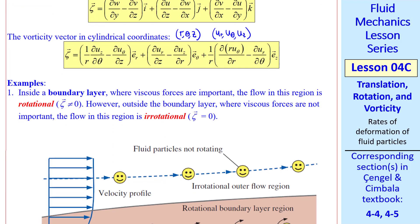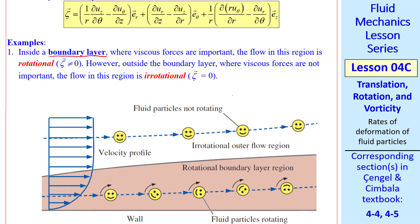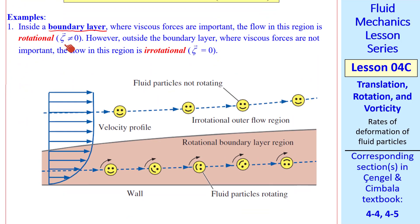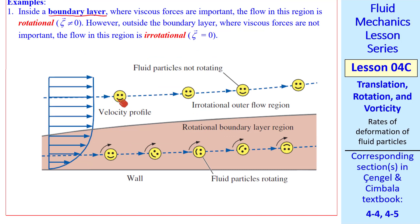Now some physical examples. In a boundary layer where viscous forces are very important, the flow is rotational. Zeta is not 0. But outside the boundary layer where viscous forces are not that important, the flow in that region is irrotational. Zeta equals 0. To illustrate, suppose the fluid element is a smiley face. In this irrotational outer flow, the fluid particle remains in the same orientation and does not rotate. In the rotational part of the boundary layer, where there's a large velocity gradient, the fluid particle rotates as it translates. Therefore, we call this a rotational region of the flow.